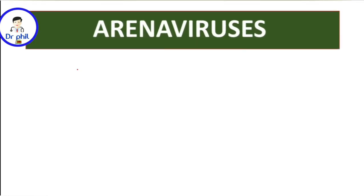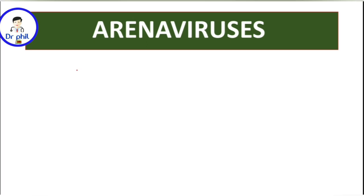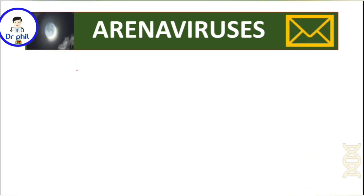In this section we're talking about the arena viruses. Some people say practice until you get it right, but I say practice until you can't get it wrong. So let's go. Can you identify the following recurring symbols?